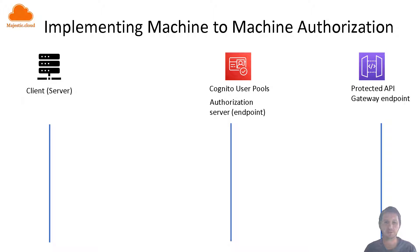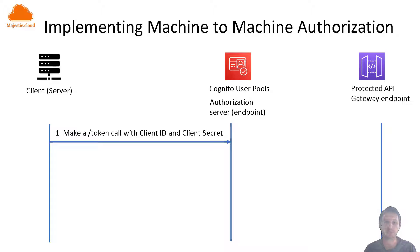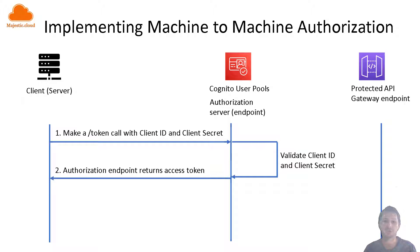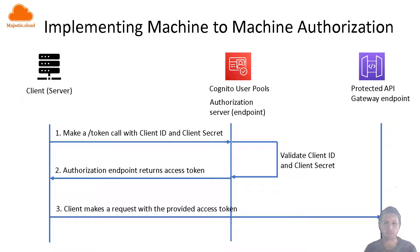This flow is best suited for machine-to-machine communications — for example, when services talk to each other, or you have CLI tools that interact with third-party services. In this case you are not going to have user credentials like a username and password. You'll have a client ID and a client secret, and you'll get back a token. Let's see quickly how the flow works.